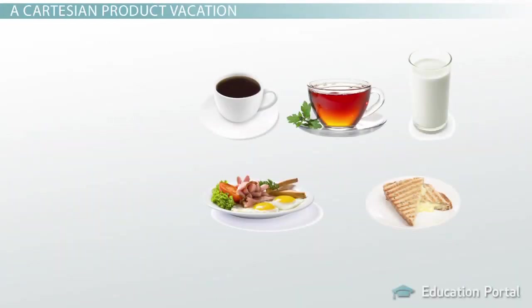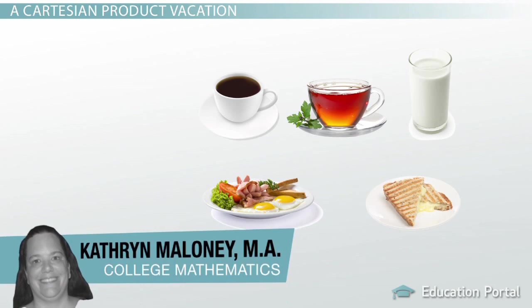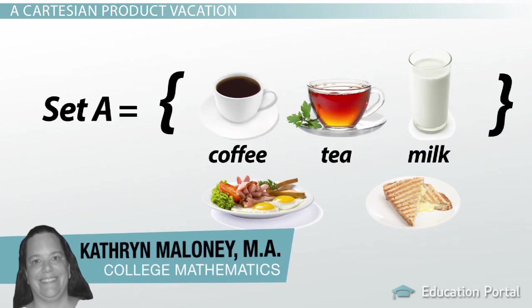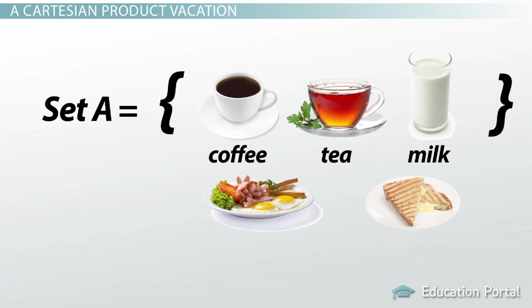Let's say we have two sets of free meals available on my vacation. Set A is coffee, tea, milk. These are my choices of free beverages.